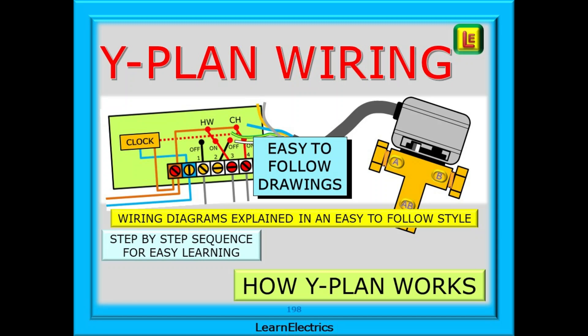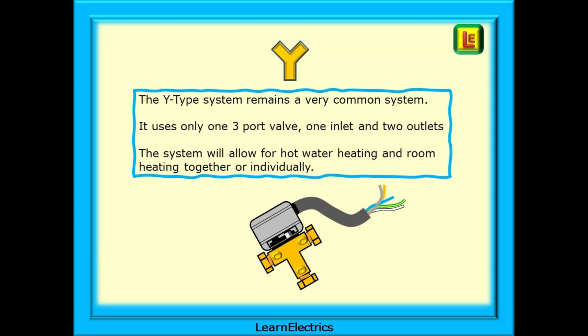In this Learn Electrics video we will look at the wiring method of the Y-Plan central heating system. A previous video looked at the wiring methods adopted for the S-Plan system. The Y-Type system remains a very common system. Many millions have been installed over the years and you will come across them often. It uses only one three-port valve comprising one inlet and two outlets. The system will allow for hot water heating and room heating together or individually.